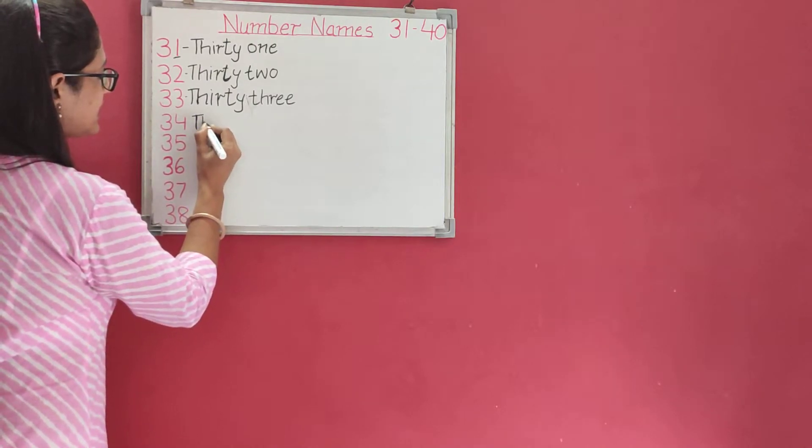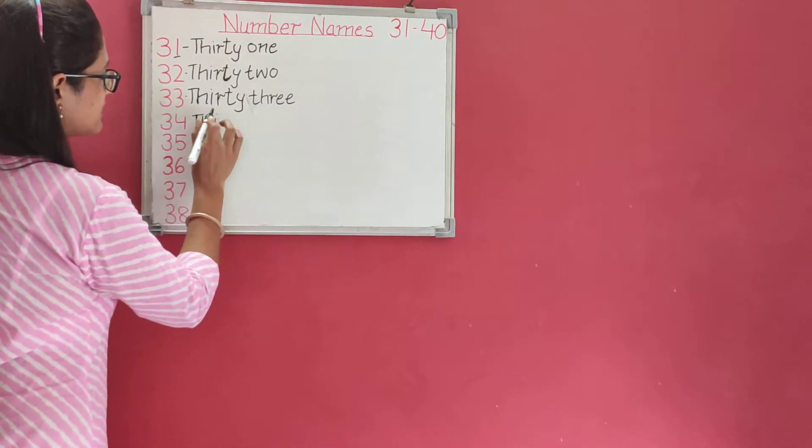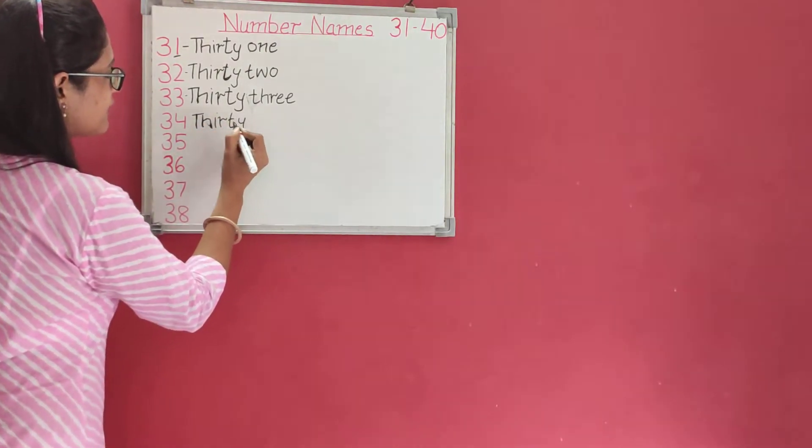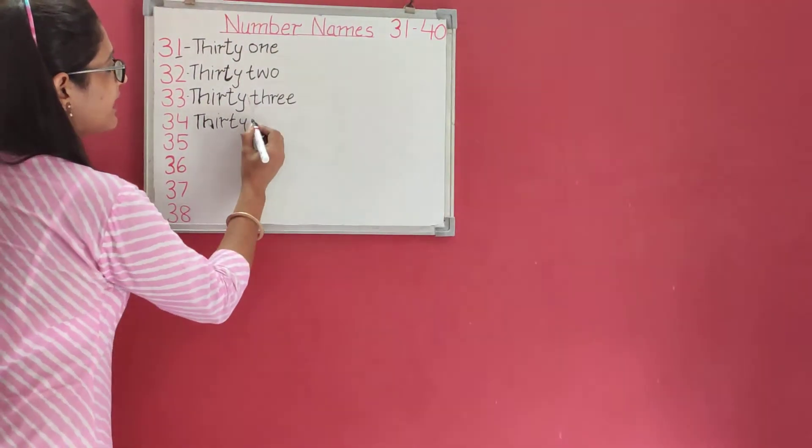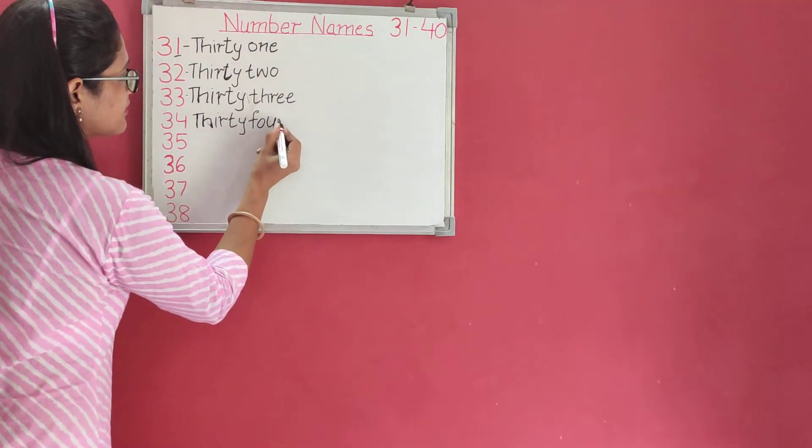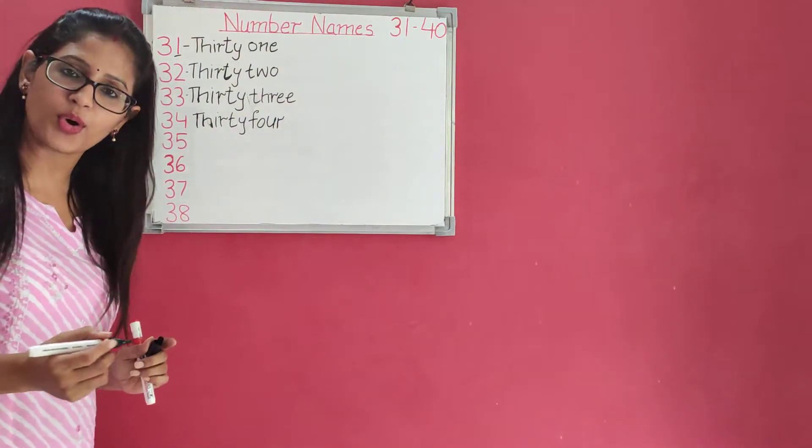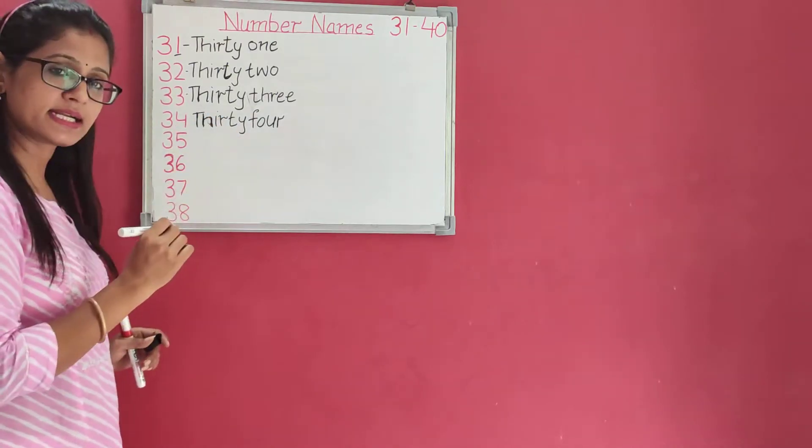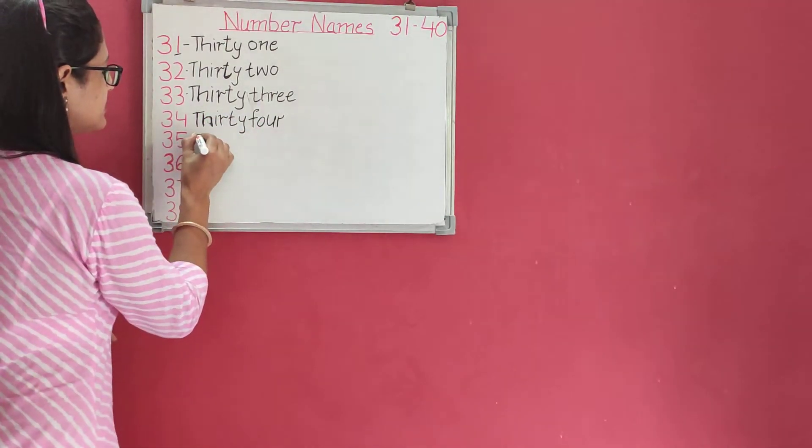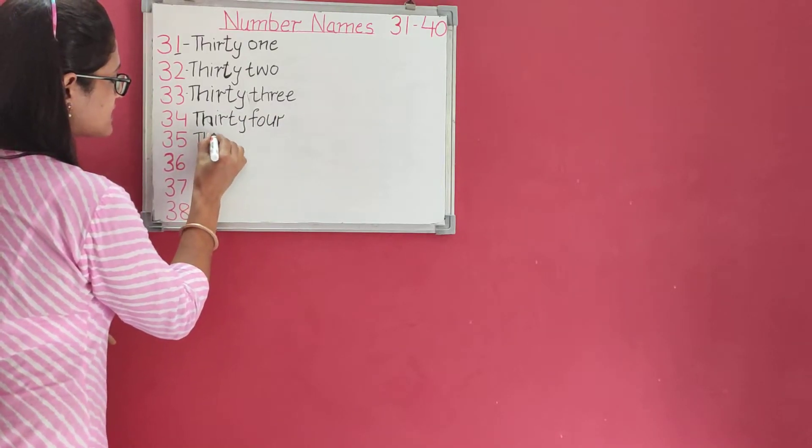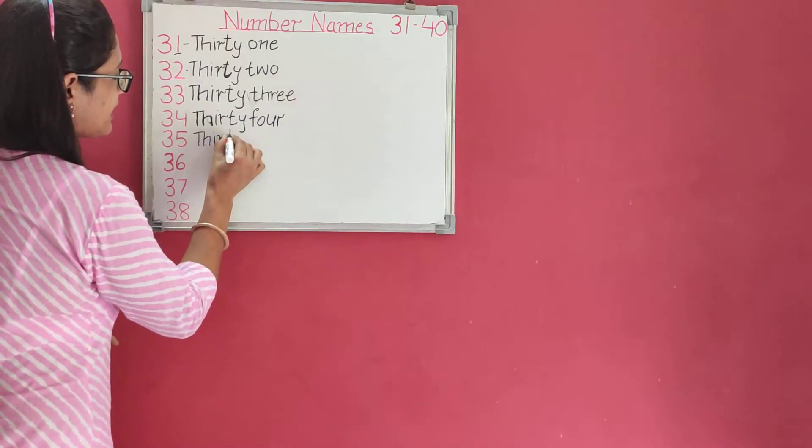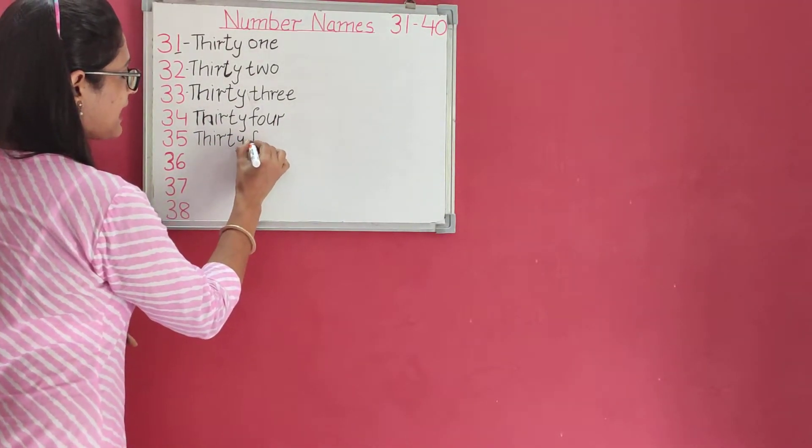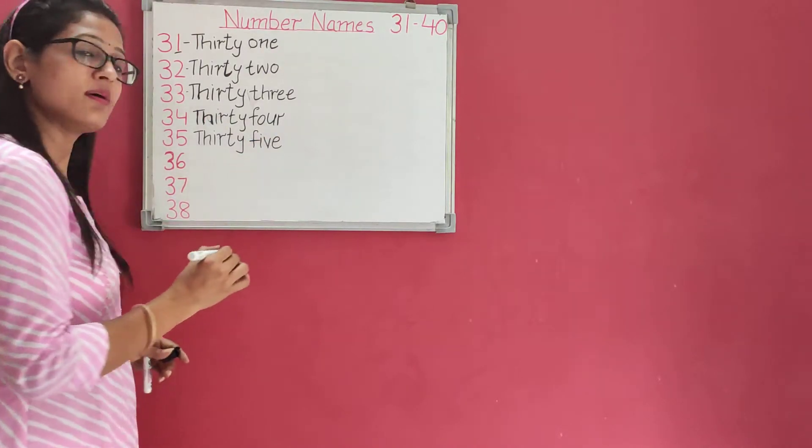T-H-I-R-T-Y, thirty. And what comes next? Four. Thirty-four. T-H-I-R-T-Y, thirty, F-O-U-R, four. Thirty-five: T-H-I-R-T-Y, thirty, F-I-V-E, five.